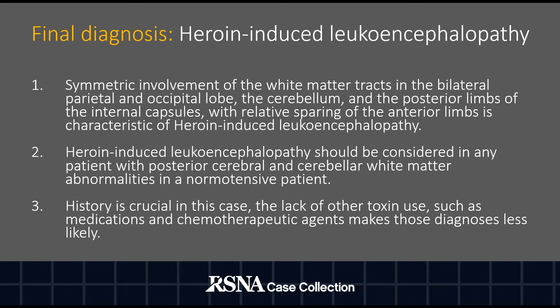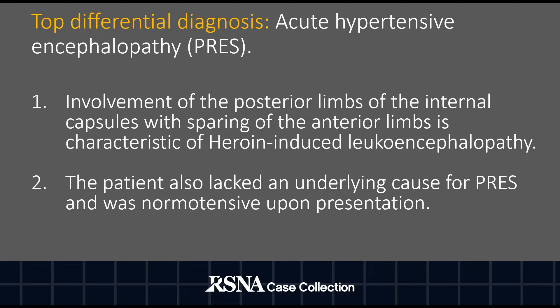Our final diagnosis was heroin-induced leukoencephalopathy. Symmetric involvement of the white matter tracts in the bilateral parietal and occipital lobes, the cerebellum, and the posterior limbs of the internal capsules with relative sparing of the anterior limbs is characteristic of heroin-induced leukoencephalopathy. This diagnosis should be considered in any patient with posterior cerebral and cerebellar white matter abnormalities in a normotensive patient. History is very crucial, as the lack of use of other toxins such as chemotherapeutic agents makes those diagnoses less likely. Our top differential diagnosis was acute hypertensive encephalopathy, also known as PRES. However, the involvement of the posterior limbs of the internal capsules with sparing of the anterior limbs is characteristic of heroin-induced leukoencephalopathy. The patient lacked any underlying cause for PRES and was normotensive on presentation. Other causes for acute toxic leukoencephalopathy were ruled out by history.